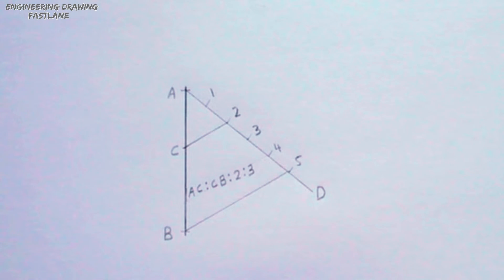Line AB has been successfully divided in a ratio of 2 is to 3.